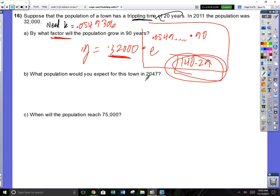Part b, what population would you expect for this town in the year 2047? First of all, 2047 take away 2011, it's 36. I am going to use 36 for my time. Now it wants the total population. I am going to take the 32 grand, times it by e to the 36 times k, which was 0.0549. Type it on your calculator, hit enter. You get 231,189 people.